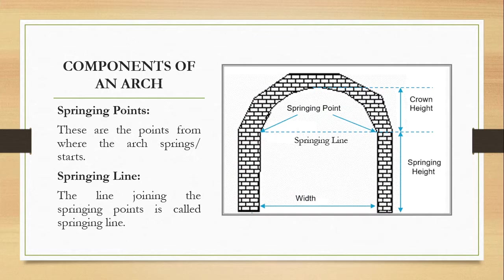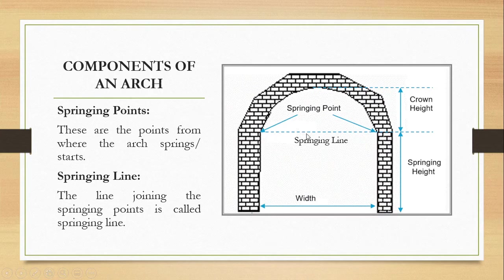Springing points and springing line: these are the points from where the arch springs or starts. From the normal wall on either side, the arch begins at these points, which are termed springing points. The imaginary line joining the two springing points is called the springing line. The springing height refers to the height at which the arch starts from the ground, and the crown height is the height up to the crown.